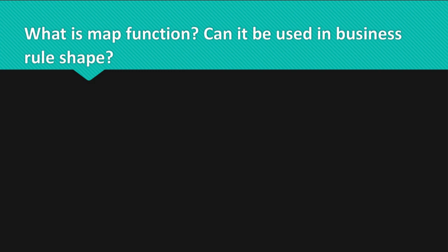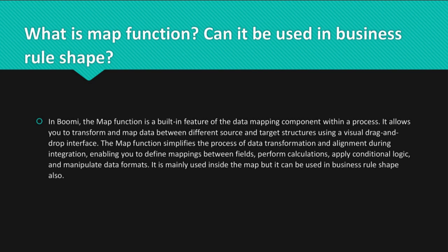Question: What is the map function? Can it be used in a business rule shape? Answer: In Bumi, the map function is a built-in feature of the data mapping component within a process. It allows you to transform and map data between different source and target structures using a visual drag-and-drop interface. The map function simplifies the process of data transformation and alignment during integration.